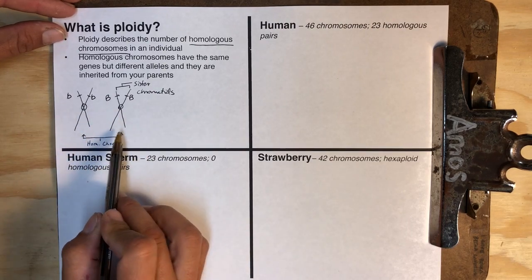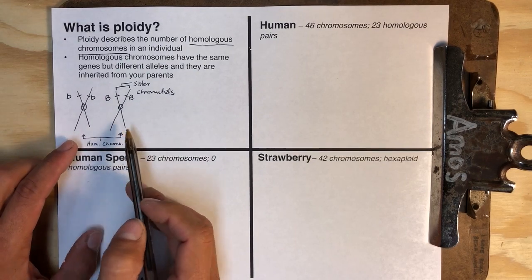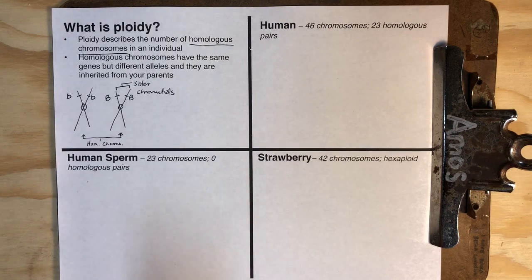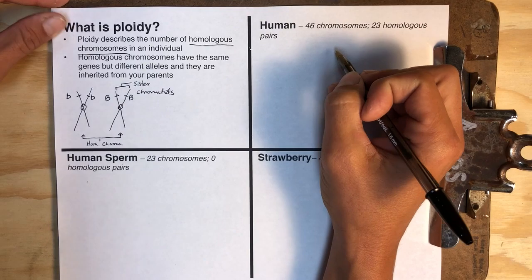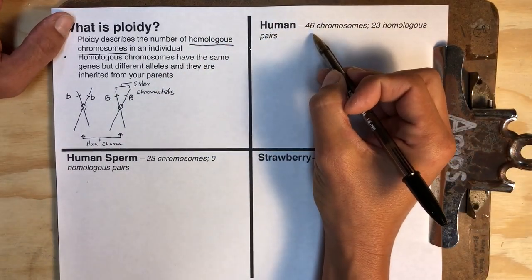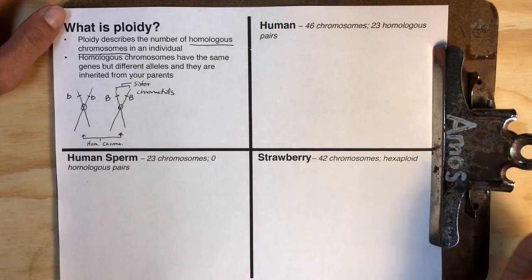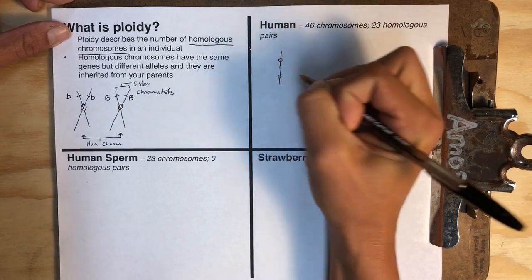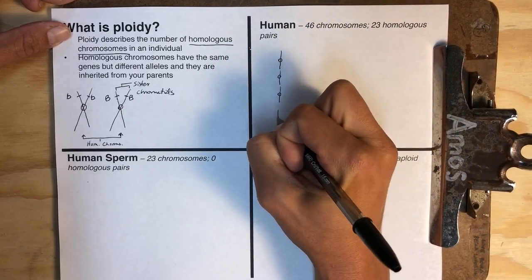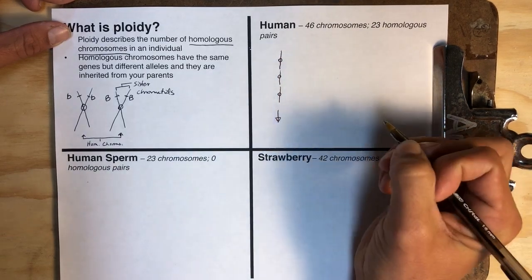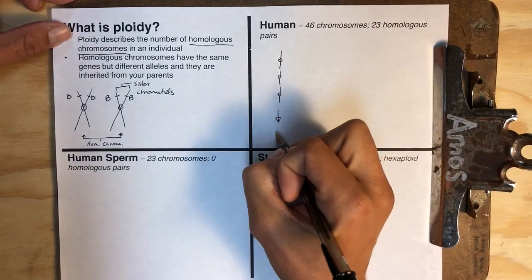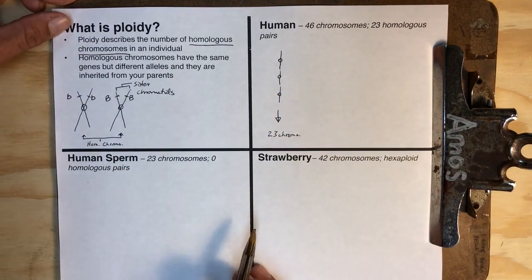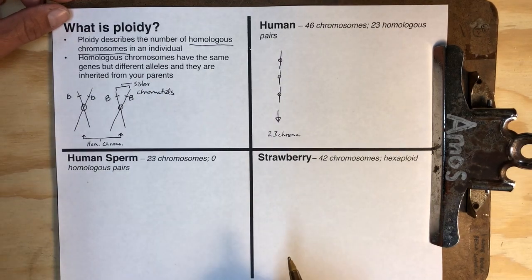Homologous chromosomes are significant because they would be the same size and of equal importance since they have the same genes inside of them. If you're talking about yourself, you have 46 chromosomes, and within those 46, you have 23 homologous pairs. If we were to line up all of your chromosomes, you would have 23 chromosomes that would contain all the genes necessary to build a human being.